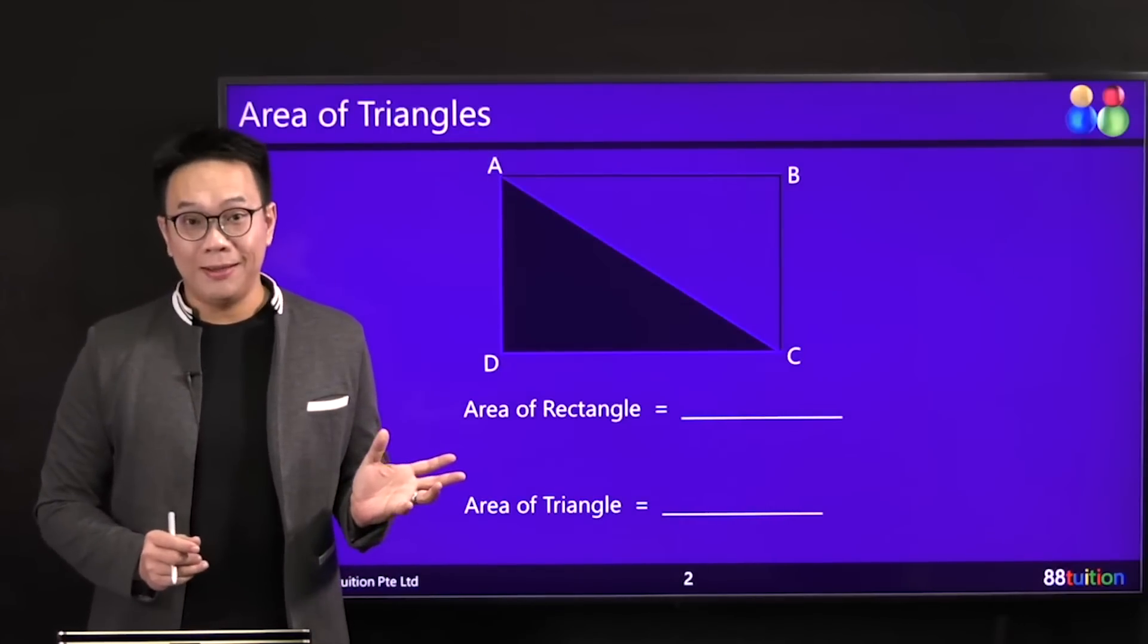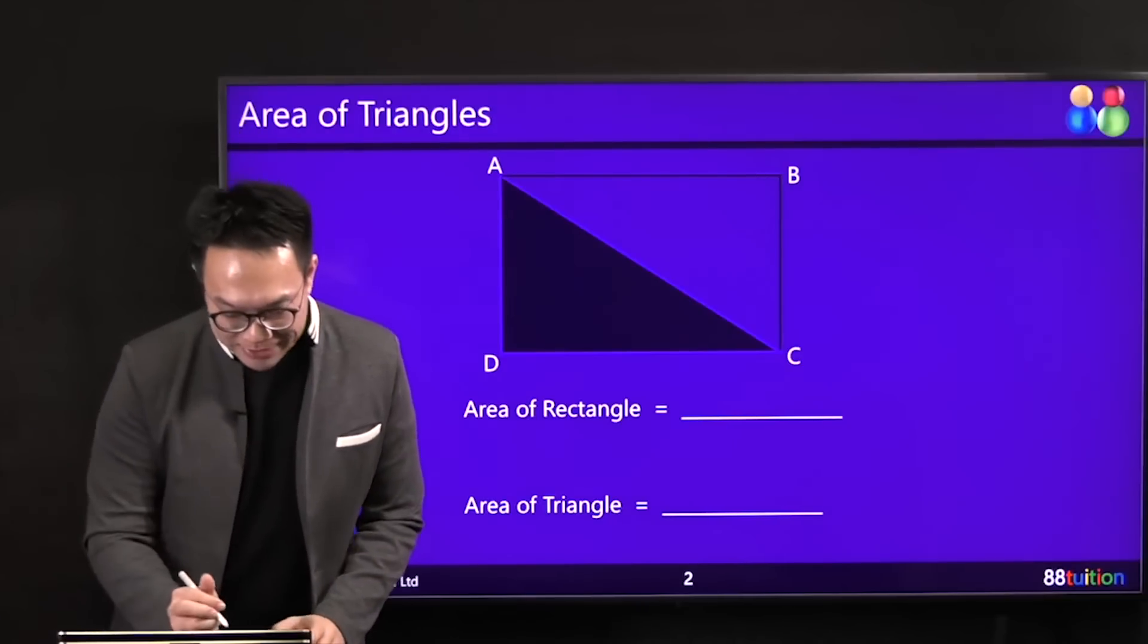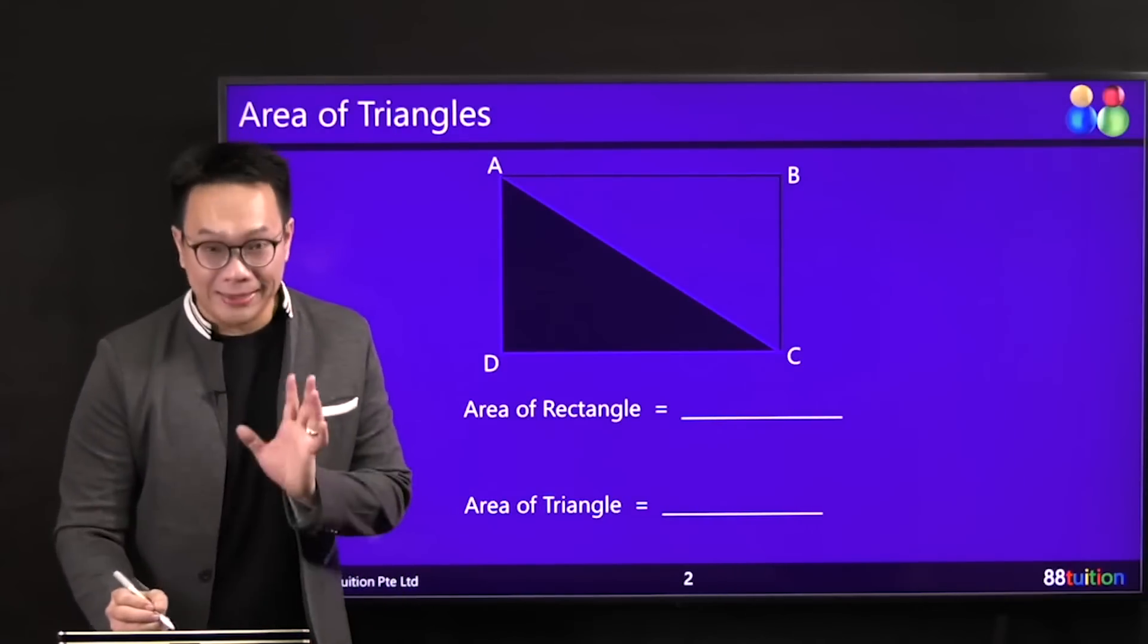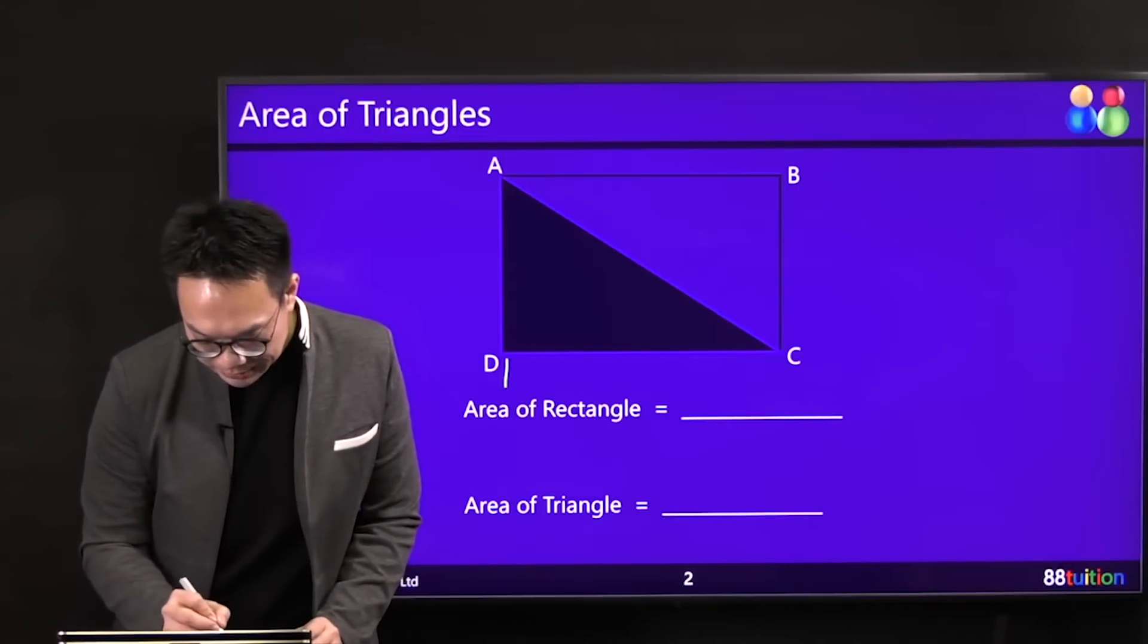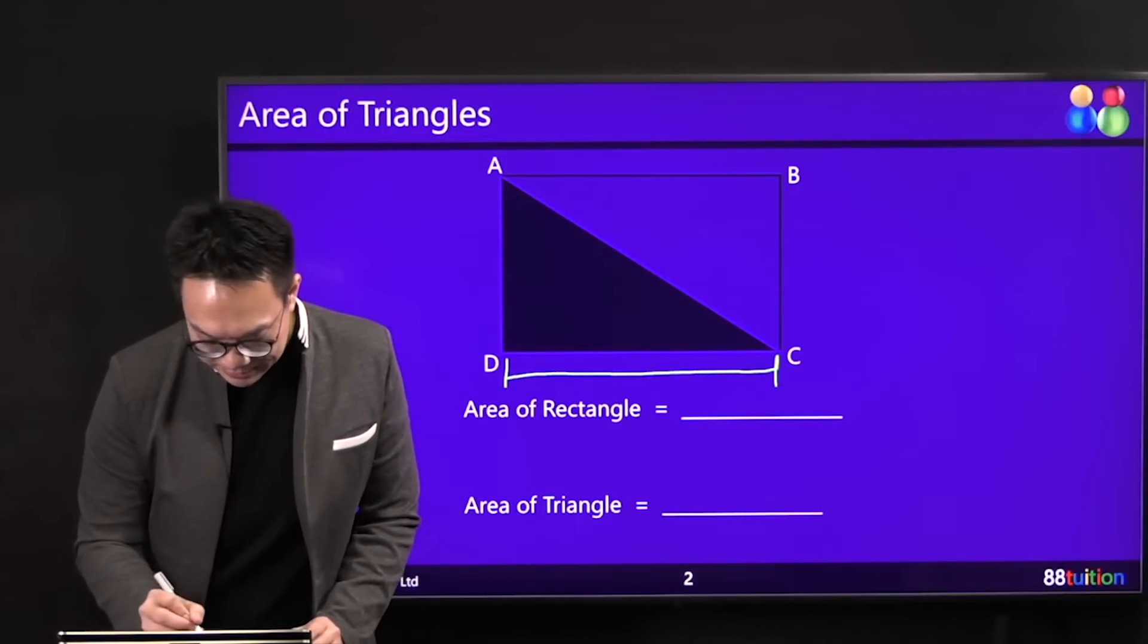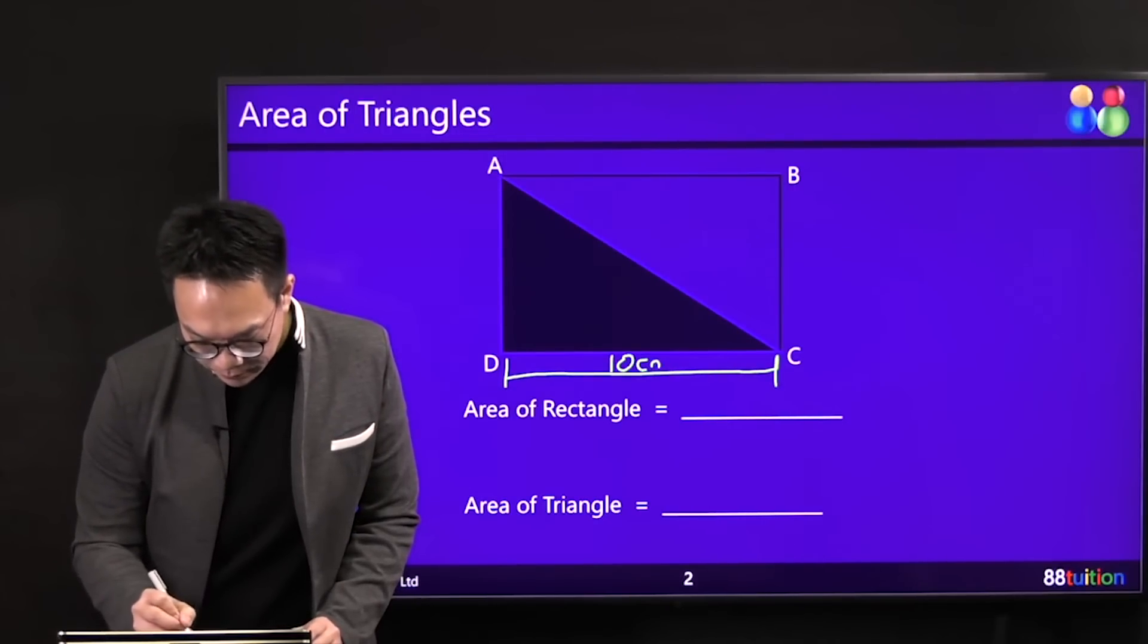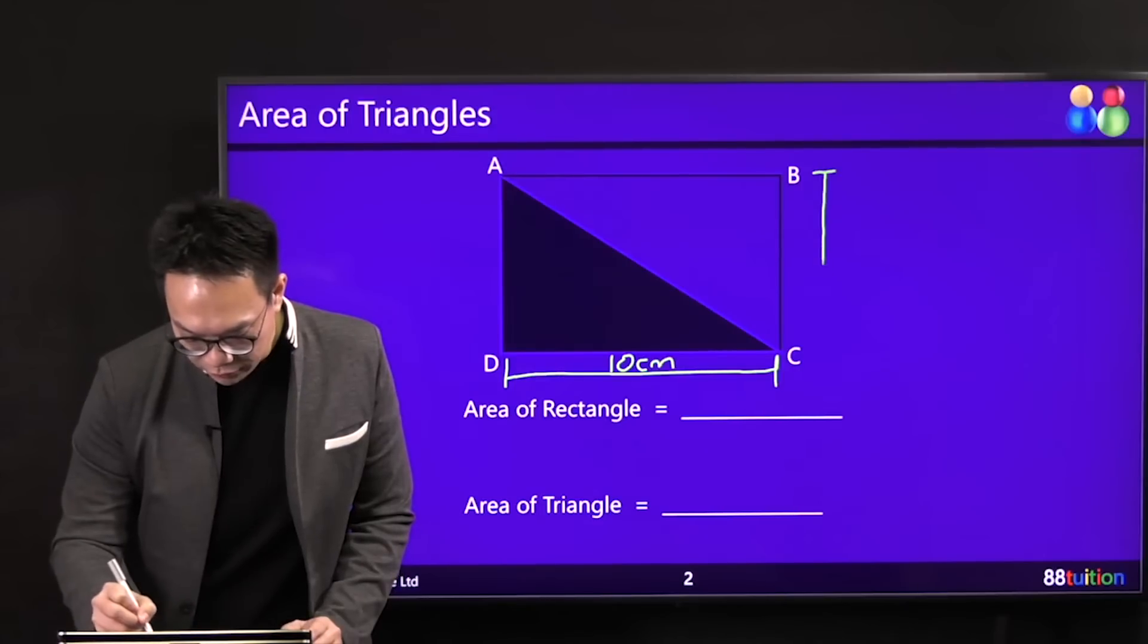Do you know how to find the area of rectangle? I bet so, right? So for instance, if I tell you that the length of the rectangle DC, let's say it is 10cm, and I tell you that the breadth of the rectangle BC is 4cm.